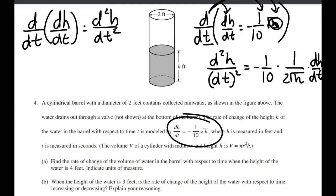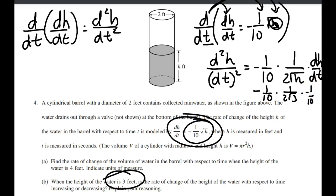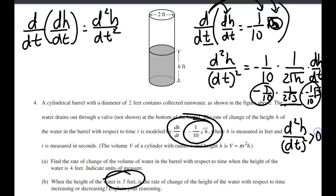Now that's the derivative. The question is, is it increasing or decreasing when the height is 3? So it's going to be negative 1/10 times 1 over 2 times the square root of 3, times dH/dt. Now dH/dt — the original problem — we replace H with 3. So we've got a negative and a negative, which is positive, and then another positive. It comes out positive, meaning it's greater than 0. Therefore, since the second derivative is positive, the first derivative — dH/dt — is increasing.